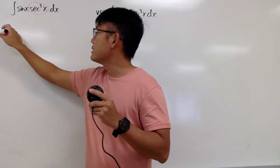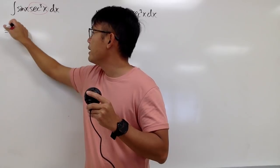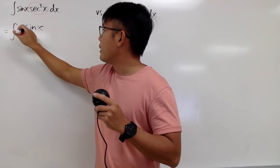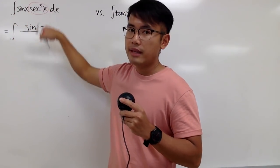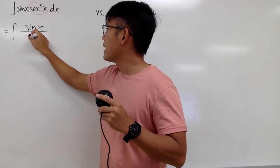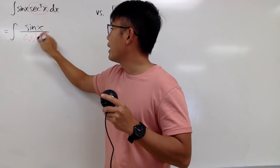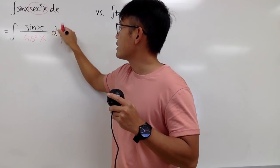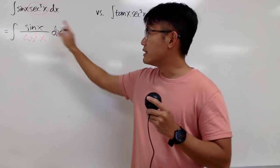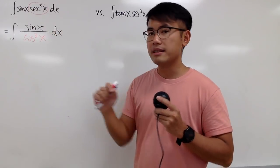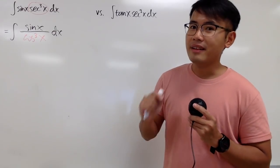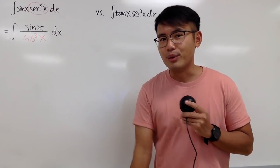This integral is the same as integrating sine x on the top over cosine to the third power x in the denominator, times dx. When you're working with sine x and cosine x in an integral, that's excellent — sine and cosine get along really well together in an integral.